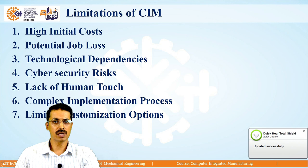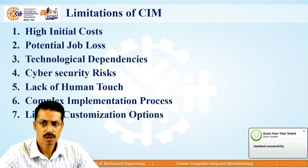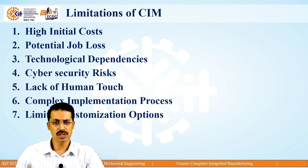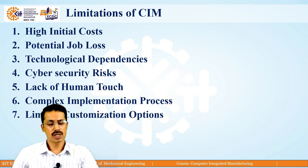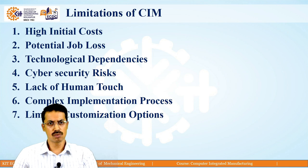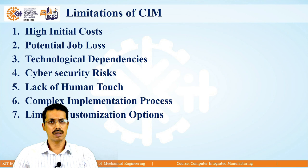The second limitation is potential job loss. As we are implementing automation or robotics in CIM, a single robot may handle three to four machines at a time. So initially, before implementation, if three workers were required for three to four machines, now only one robot can handle all of them — meaning there is a potential job loss for those three to four workers. This is a threat of CIM implementation.